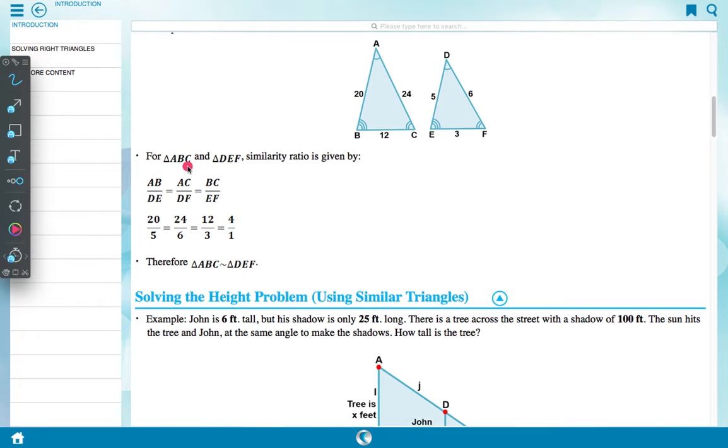Now for triangle ABC and triangle DEF, similarity ratio is given by: AB upon DE is equal to AC upon DF is equal to BC upon EF. Here 20 upon 5, AB upon DE, AB is 20 and DE is 5, so 20 upon 5. AC upon DF is 24 upon 6. Here AC is 24 and DF is 6, so 24 upon 6 is equal to 12 upon 3. BC upon EF, BC is 12 upon EF is 3, is equal to 4 upon 1. Therefore triangle ABC is similar to triangle DEF.